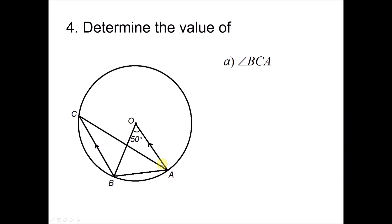Question 4A: Angle BCA is at the circumference and angle BOA is at the center, both subtended by the same arc AB. The angle at the circumference is half the angle at the center, so angle BCA equals 50° divided by 2, giving BCA equals 25 degrees.